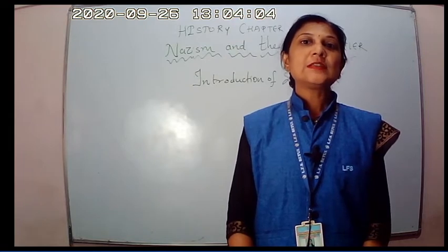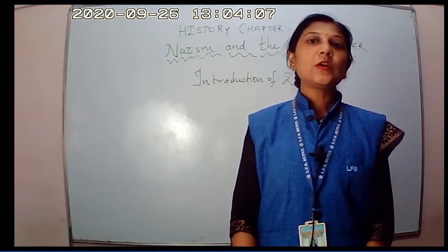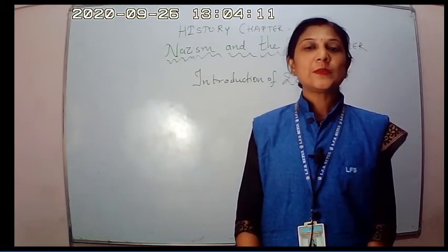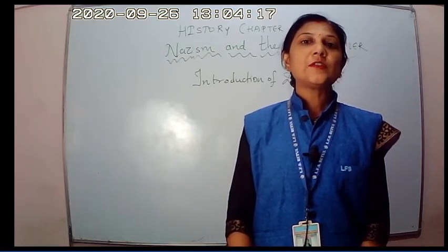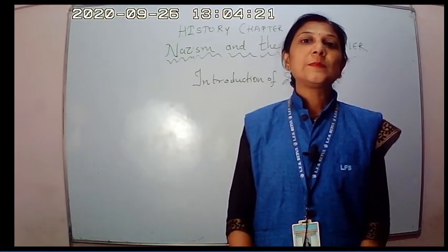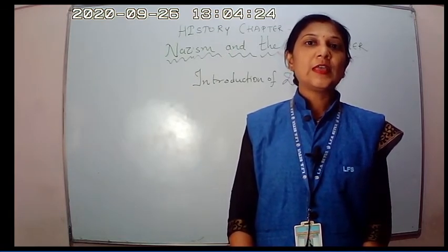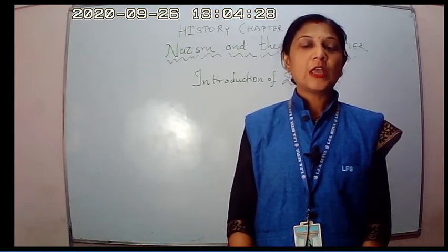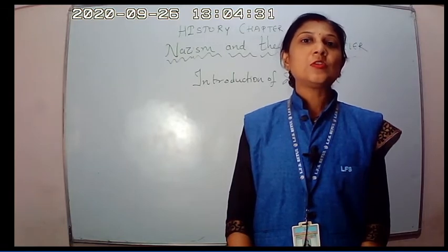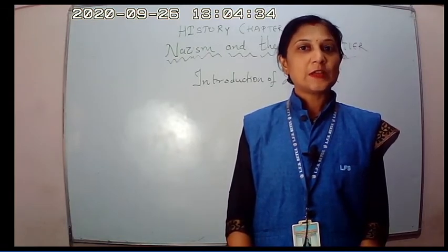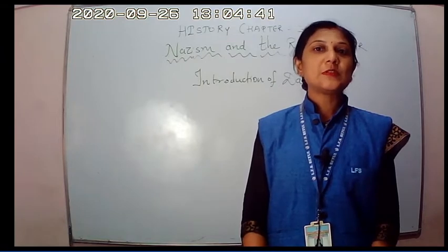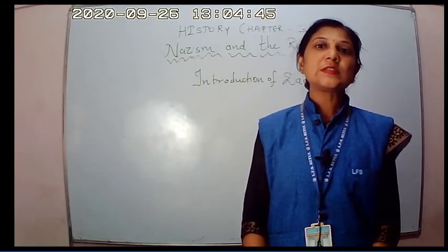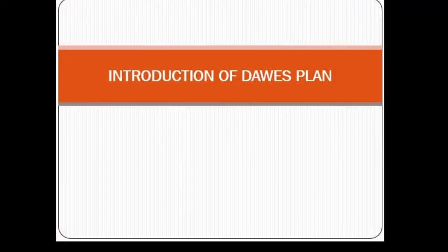Today, I am going to explain the next video about the failure of the Dawes Plan introduced by the USA. You might have read in your book that the USA introduced a Dawes Plan regarding the reparation of Germany from its economic condition. I have explained you about hyperinflation previously. Now, in this video, I am going to explain how America introduced the Dawes Plan for the reparation of the economic condition of Germany, but it was not successful because of some reasons. Let us see with the help of some slides what these reasons were.